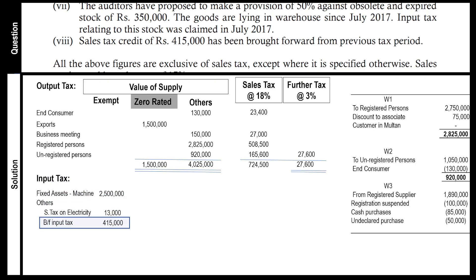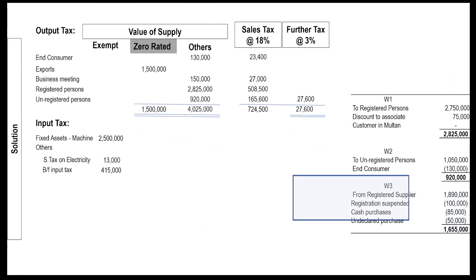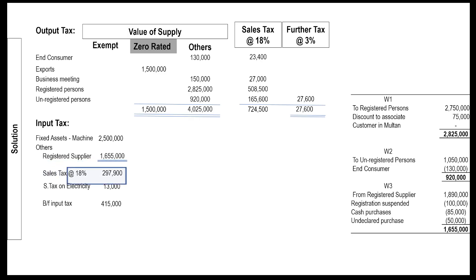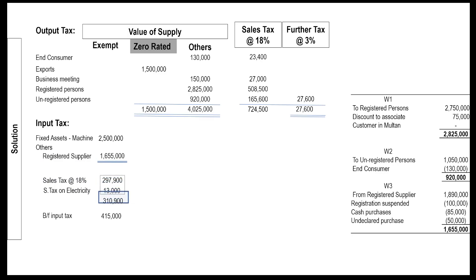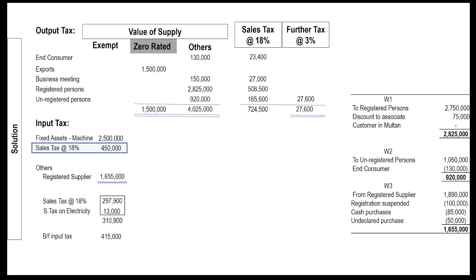All information from the question has been recorded in our solution. Now we can finalize our working for purchases — make its total and mention it in the solution. Calculate sales tax at 18%, which comes to rupees 297,900. Add up all sales taxes of the current tax period. Now move to fixed assets: calculate sales tax at 18%, which gives rupees 450,000. Now we have two sales taxes for the current tax period. Sales tax on fixed assets should be distributed between zero-rated and others, and similarly others' input tax should also be distributed between zero-rated and others.